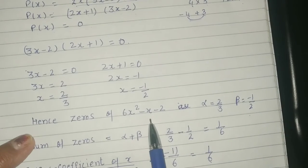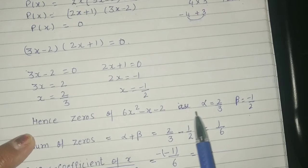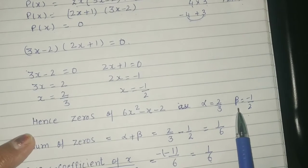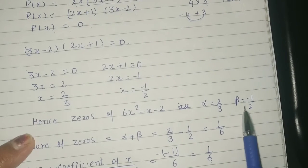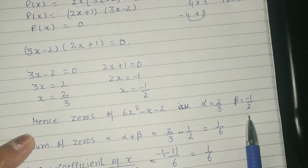Hence, zeros of this polynomial are alpha and beta. Value of alpha is 2 upon 3, and value of beta is minus 1 upon 2.